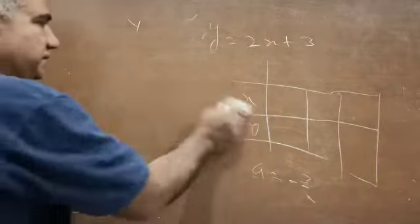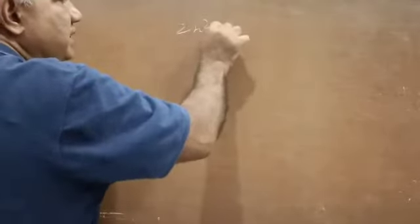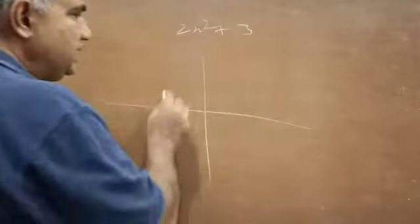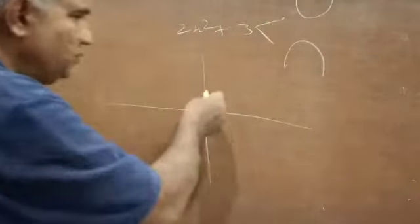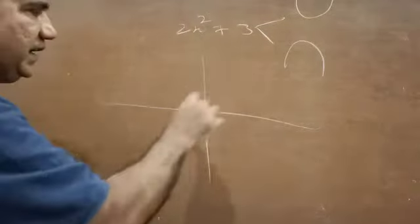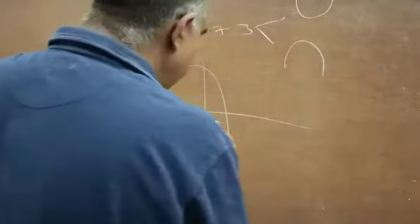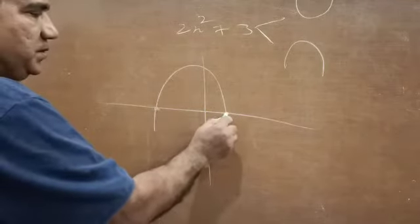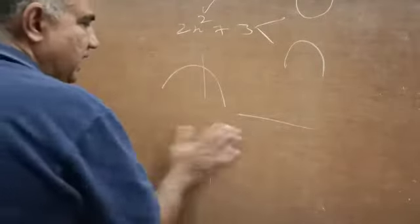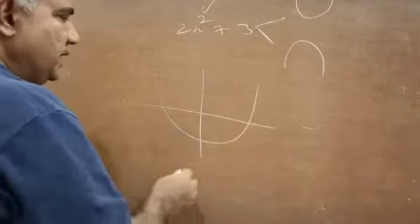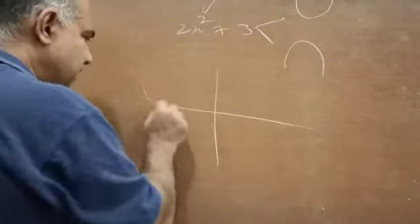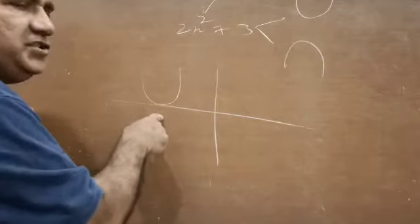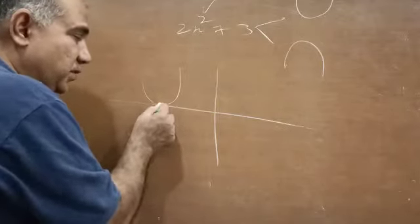For a quadratic polynomial, when you draw the graph it will be in two forms: either a parabola opening upward or a parabola opening downward. This can have two intersections with the x-axis — the x-coordinates of those two points are the zeros, so it has two zeros. Or it may intersect at just one point, giving one zero.